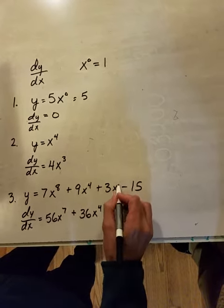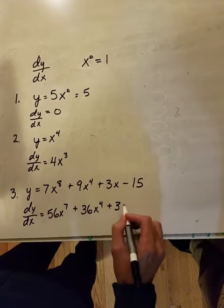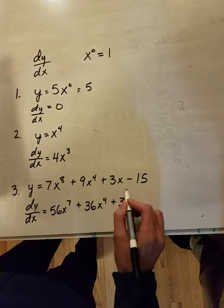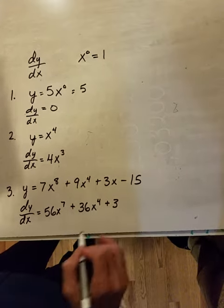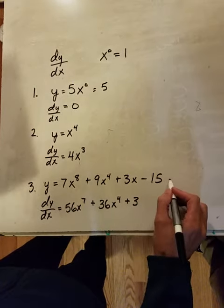this is x to the 1st, so it's 3x, or 3 times 1. And then that leaves us x to the 1st, and then 15 is 15 times x to the 0, so that term goes away.